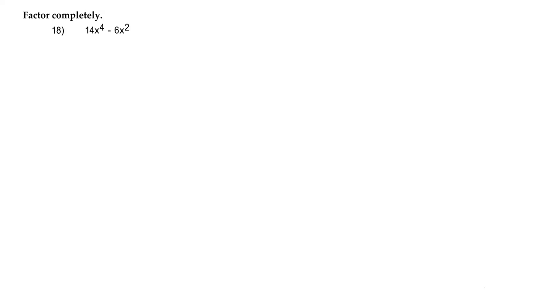So here we're going to factor completely, and we have 14x to the 4th power minus 6x squared. In order to factor, we're basically just going to simplify, or in other words, pull out whatever we can from the two terms that we have here to make this problem more simple.